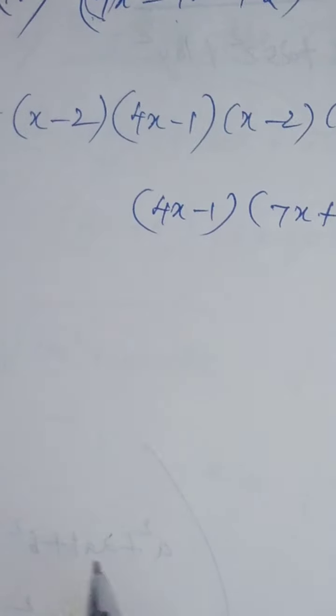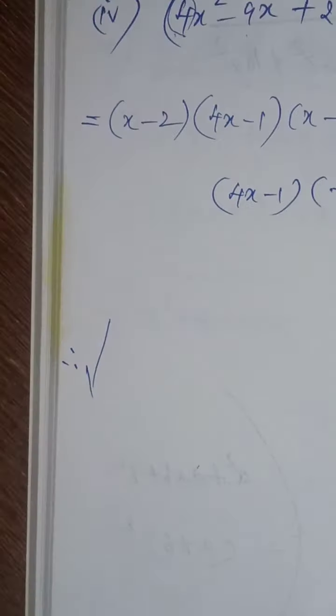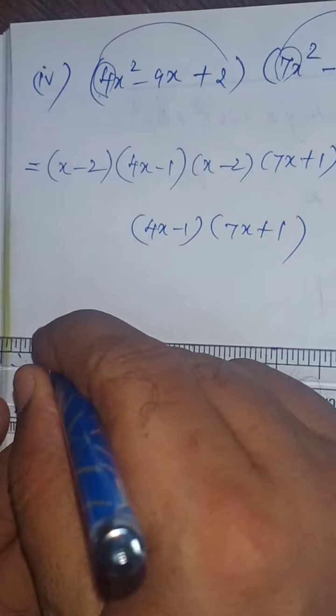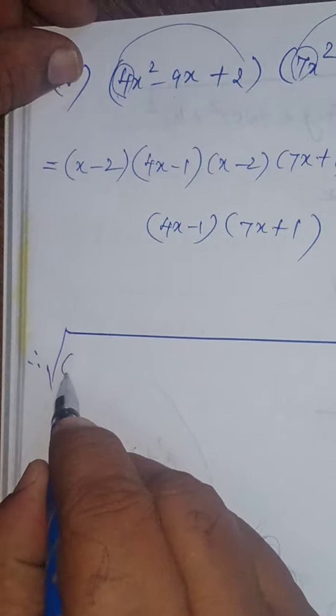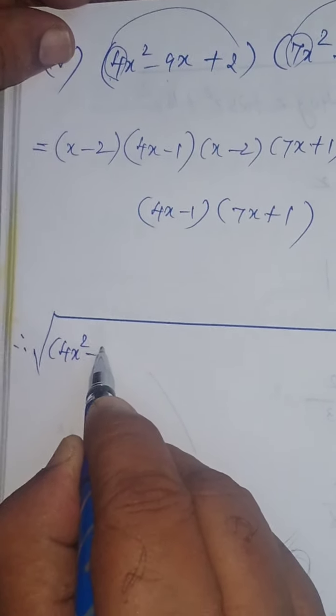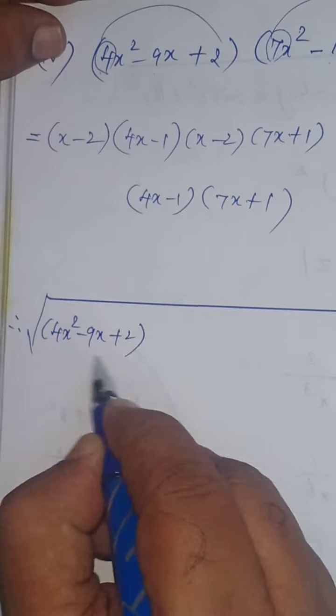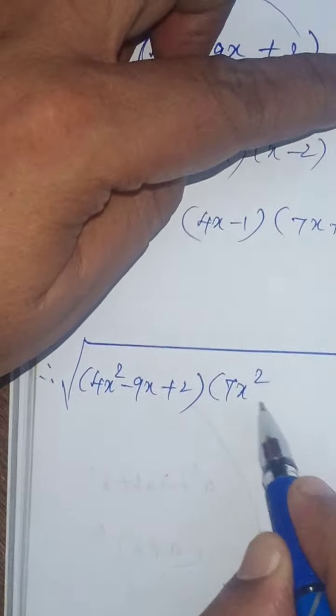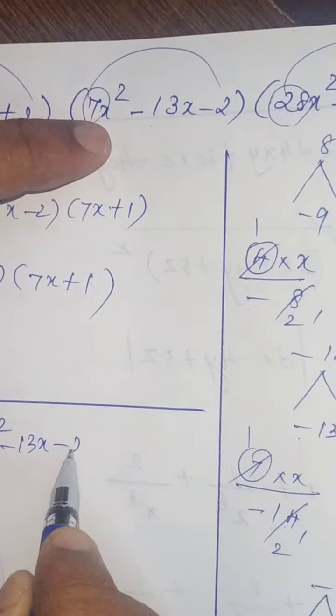Now, therefore, square root of 4x squared minus 9x plus 2, 7x squared minus 13x minus 2, 28x squared minus 3x minus 1.